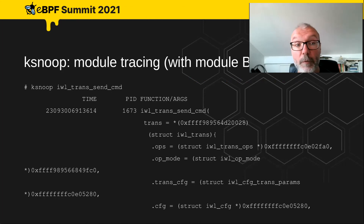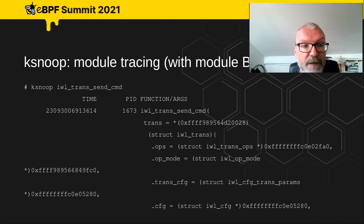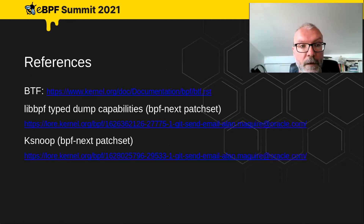ksnoop can also support kernel modules by using module BTF — if module BTF is available, you can use it. Here we can see an example of tracing an iwlwifi function.